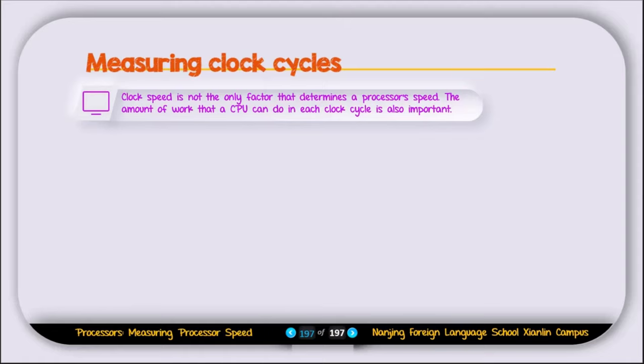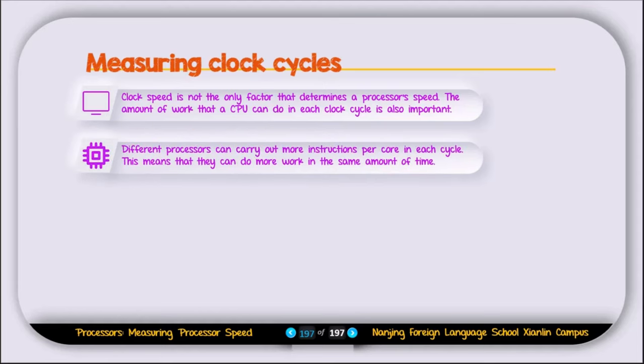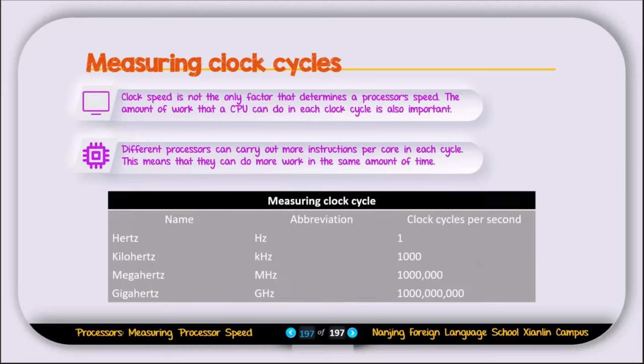Clock speed is not the only factor that determines the processor's speed. The amount of work that a CPU can do in each cycle is also important. Different processors can carry out more instructions per core in each cycle. This means that they can do more work in the same amount of time. So here is a table about measuring clock cycles. You can pause the video and view it.